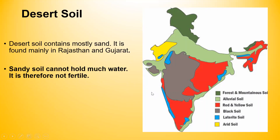Desert soil contains mostly sand. It is found mainly in Rajasthan and Gujarat. Sandy soil cannot hold much water and is therefore not fertile. Not many crops can be grown in the sandy or desert soil.